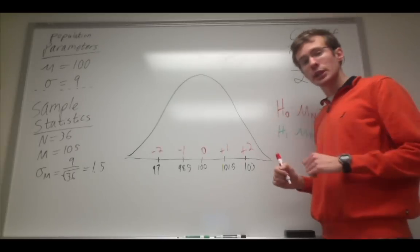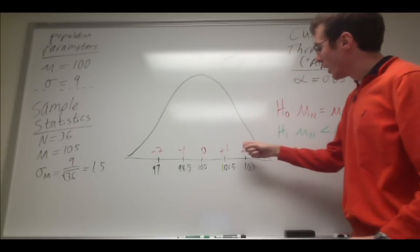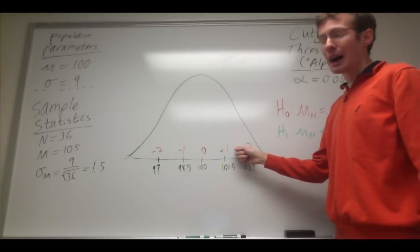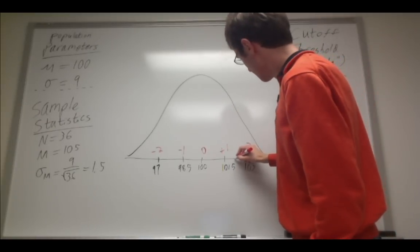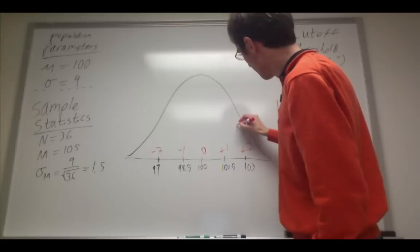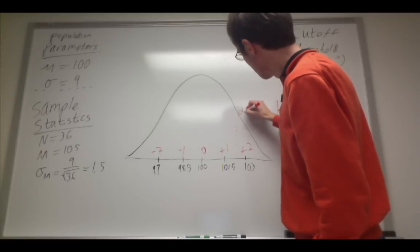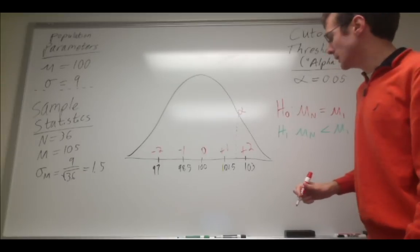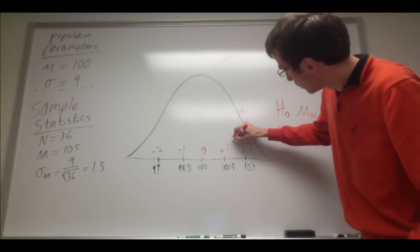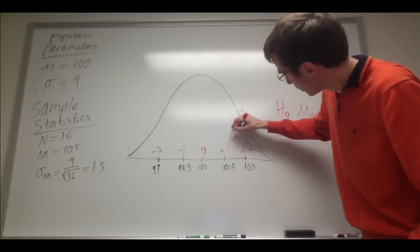Now, it's directional, so in particular, I'm looking for a score of greater than positive 1.65. So my threshold is going to be about right here. This is also called alpha, so I'm going to mark that with the alpha symbol. 1.65.